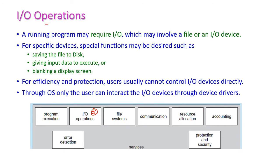The CPU runs the process, and to complete it, input or output may be required. For input or output, we need a file or IO devices. Through a file we can get input, or output may be stored into that file. Through an input device we can get input to execute the process, or the output may be displayed on output devices. Special functions may include saving to disk, hard disk, or CD-ROM.